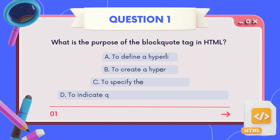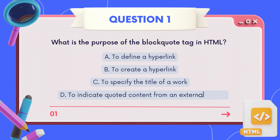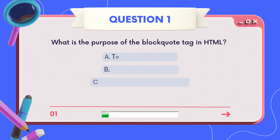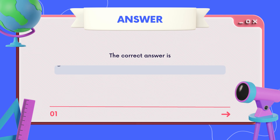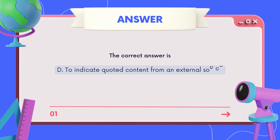Question one: what is the purpose of the block quote tag in HTML? A) to define a hyperlink, B) to create a hyperlink, C) to specify the title of a work, D) to indicate quoted content from an external source. Time's ticking — choose your answer. The correct answer is D: to indicate quoted content from an external source. Well done!